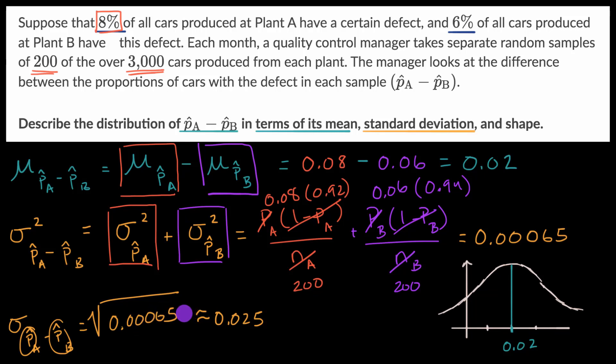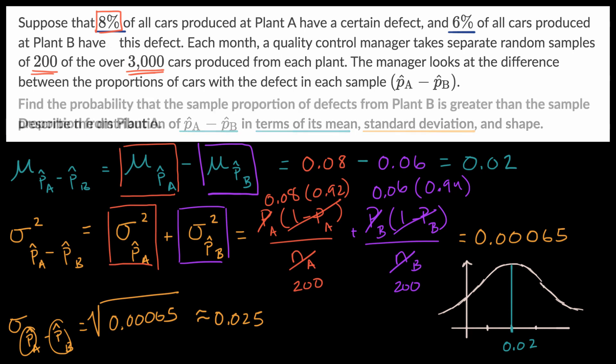In a previous video, we explored the sampling distribution that we got when we took the difference between sample proportions. And in that video, we described the distribution in terms of its mean, standard deviation, and shape. What we're gonna do in this video is build on that example and try to answer a little bit more about it.